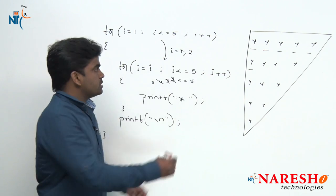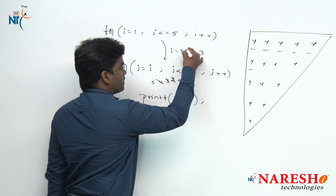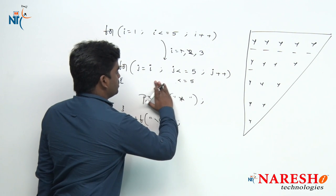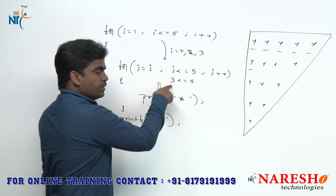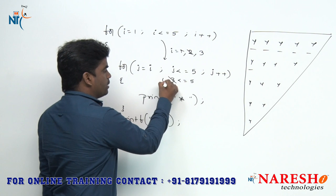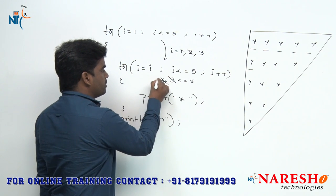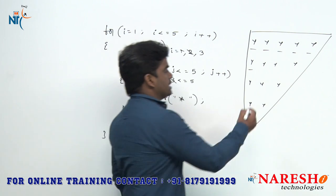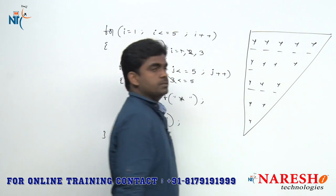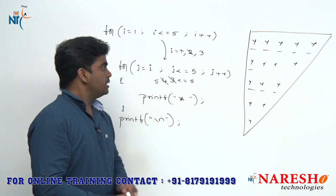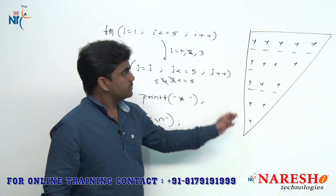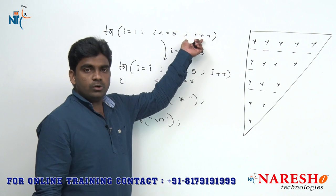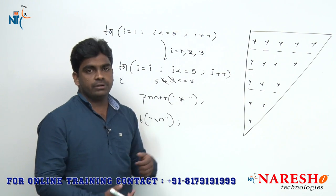The outer loop executes again, I becomes 3. J value restarts with 3 — iterations for J = 3, 4, 5 — so 3 iterations, meaning 3 stars print in the third row. And like that it continues to print the complete pattern. Using the increment operator in the outer for loop and increment operator in the inner for loop, it will print this pattern.